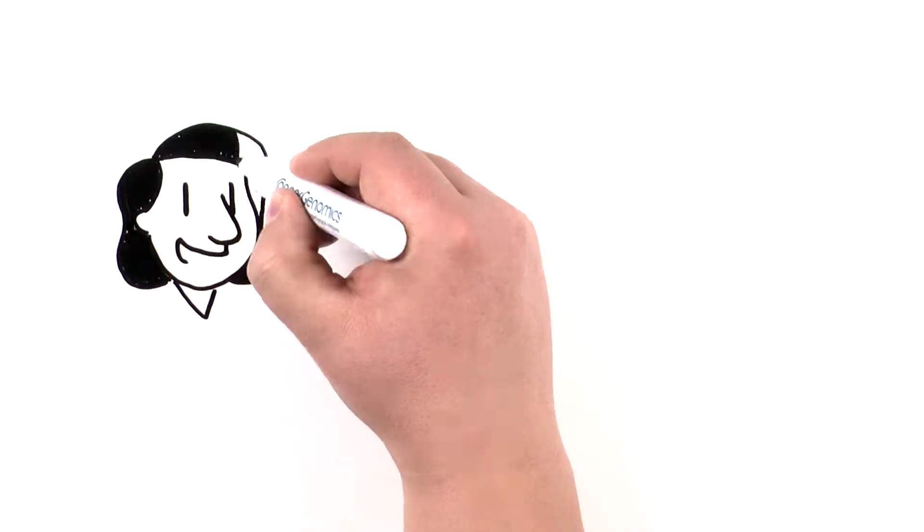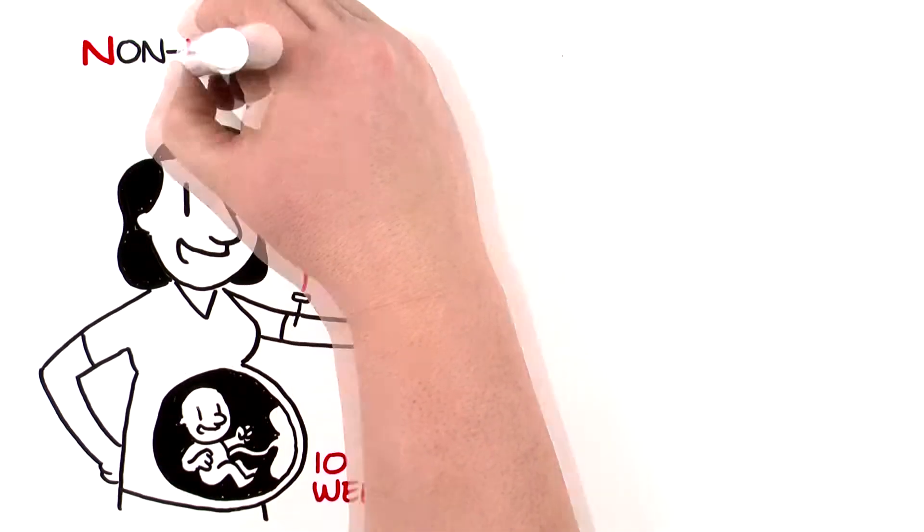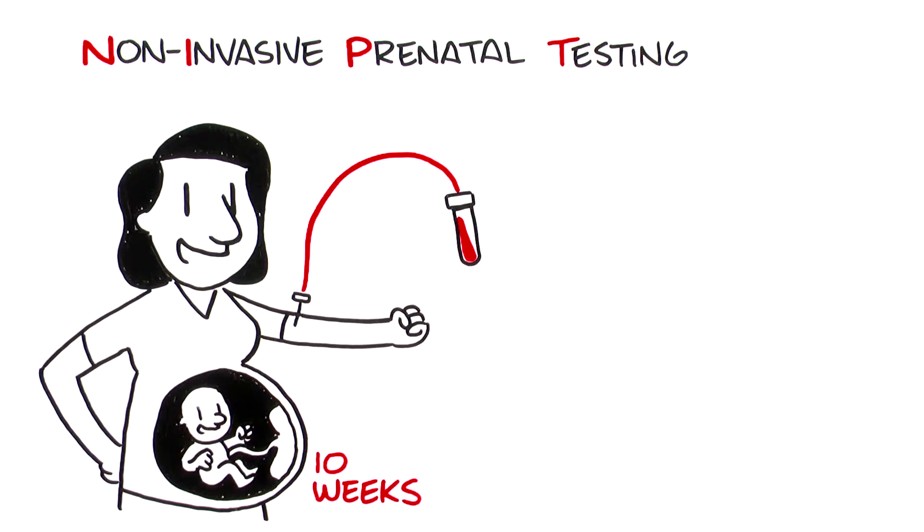It's simple. A one-time blood draw from the mother's arm that can be performed as early as 10 weeks of pregnancy. Non-invasive prenatal testing, or NIPT, works like this.